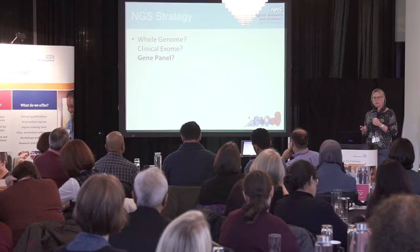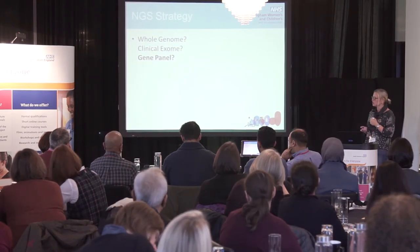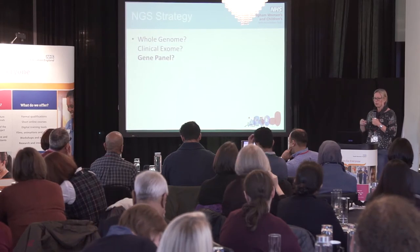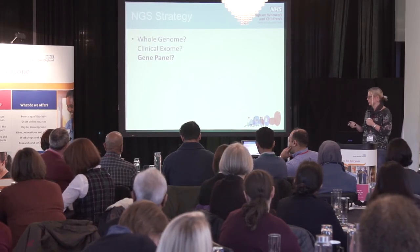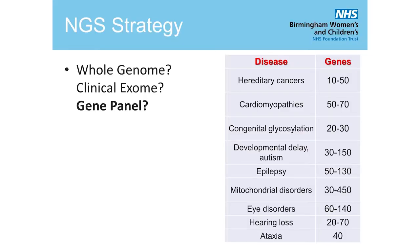Talking about how we use next-generation sequencing in our clinical genomic laboratories, we have questions to ask: is it more appropriate to look at the whole genome, or just the coding region — that 1 to 5% of the genome that makes protein, known as the exome — or should we concentrate on specific gene panels? For a patient referred with hereditary cardiomyopathy, for example, there are up to 70 genes involved, so it may be most appropriate and cost-effective to design a gene panel and look at just those 70 genes.